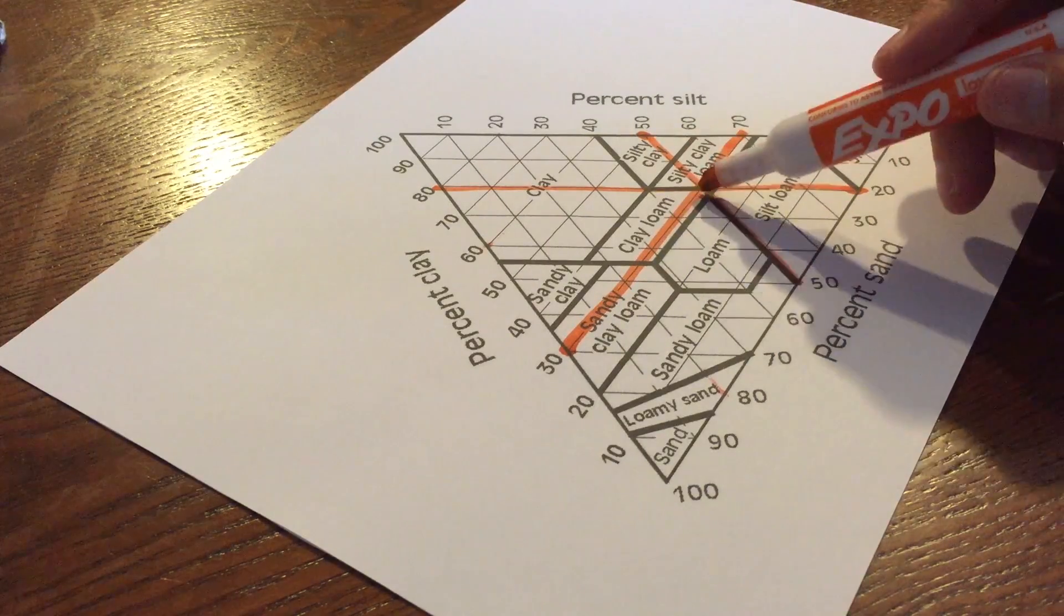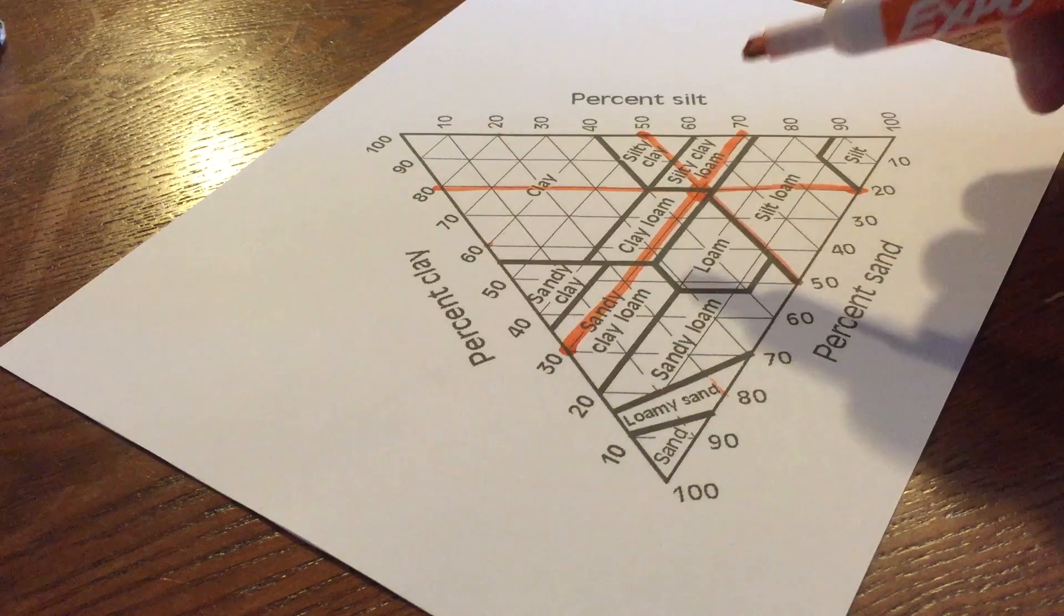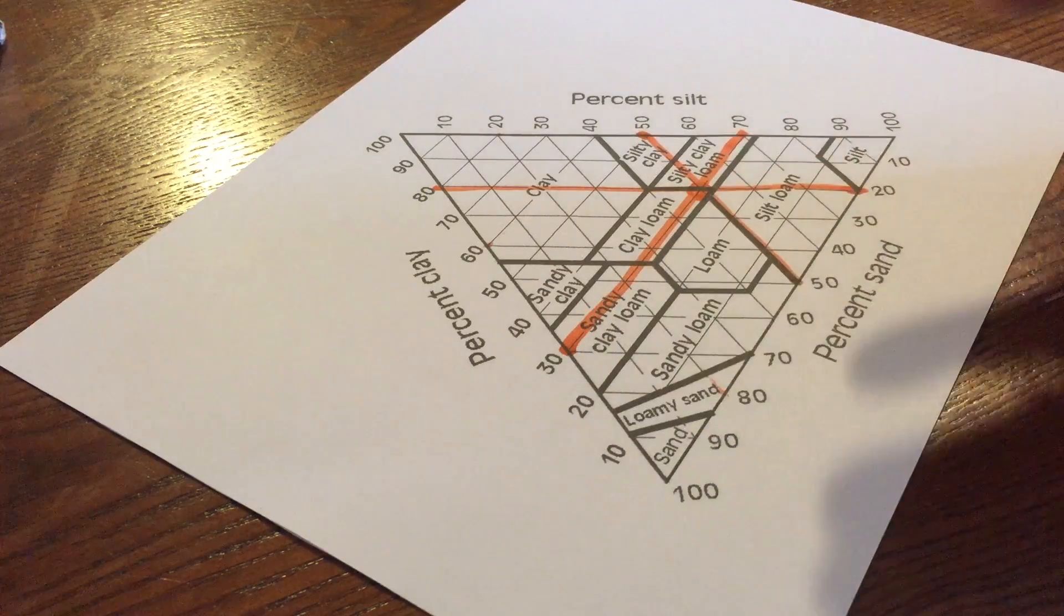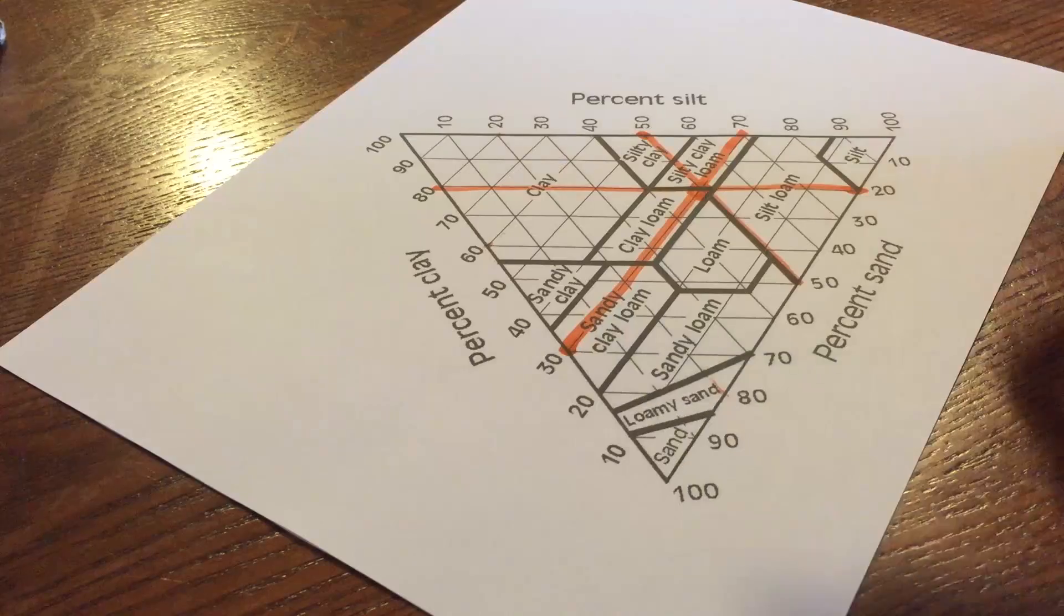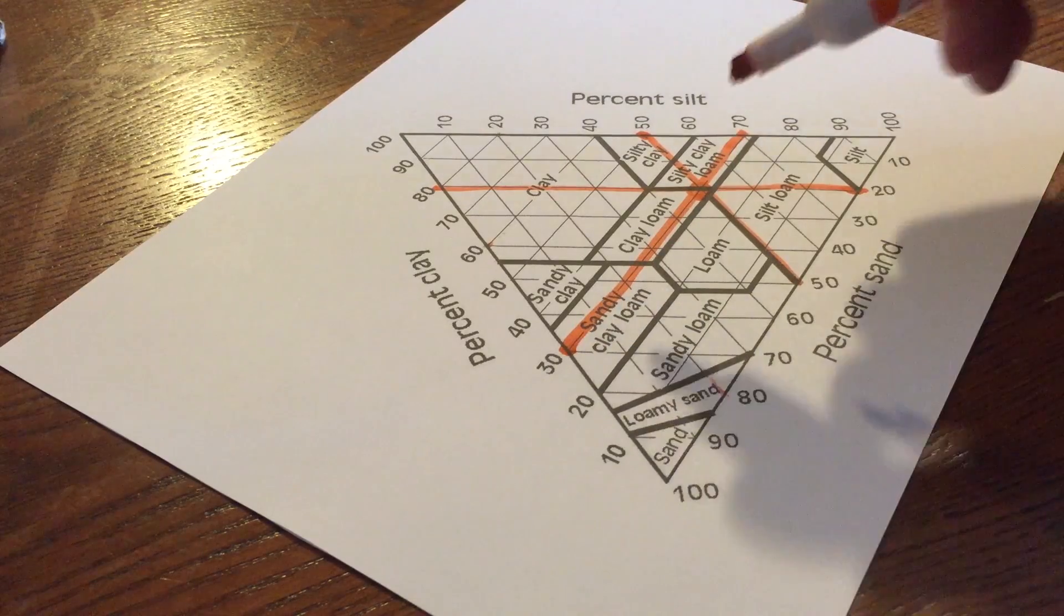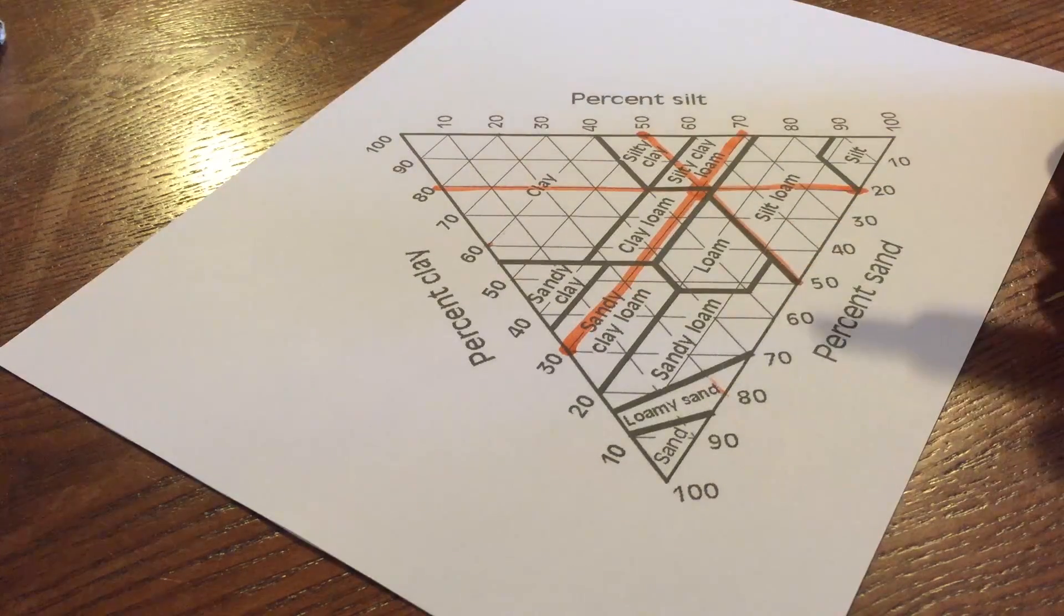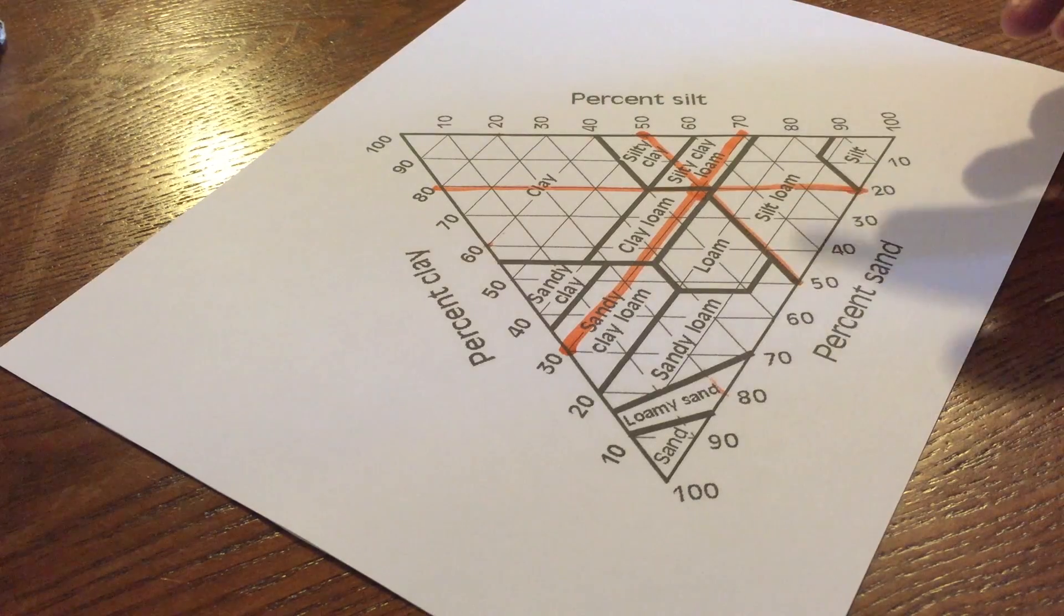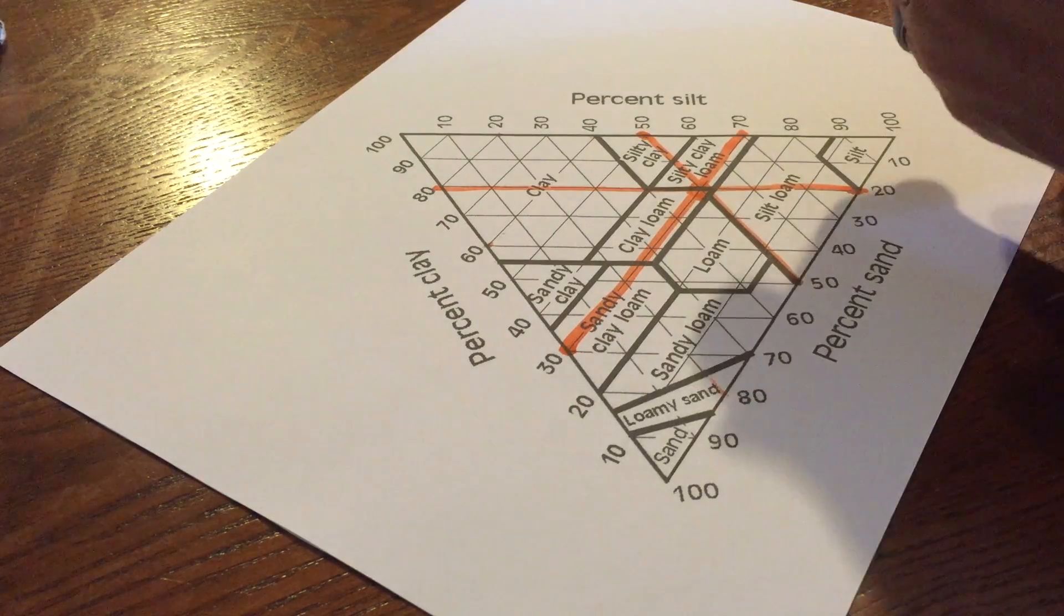This one is right in between the silty clay loam and the clay loam, like right in between right there. So that has almost a dual classification, but you can classify it now in one of the categories that come with the USDA's soil texture triangle.